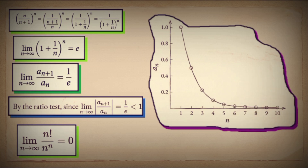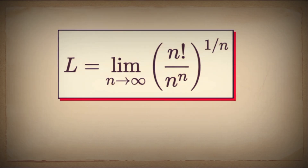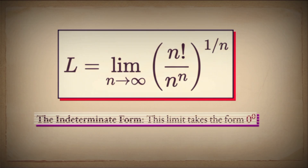The limit as n approaches infinity of n factorial divided by n to the power of n equals 0. But this is just the preamble. Now consider the nth root of our sequence — this is Euler's target. We've just shown the base goes to 0, but the exponent 1/n also goes to 0. This is the indeterminate form 0 to the power of 0. A direct assault won't work. We need a bridge to a form we can handle.